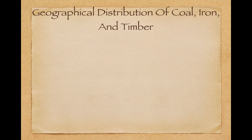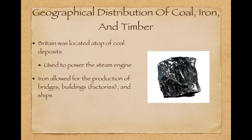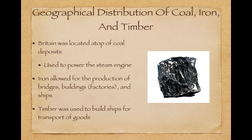The geographical distribution of coal, iron, and timber was also important because Britain was located atop coal deposits. This would be used to power the steam engine in factories and on ships, and later on railroads. Iron allowed for the production of bridges, buildings — specifically factories — and ships. And timber was used to build ships for the transport of goods.